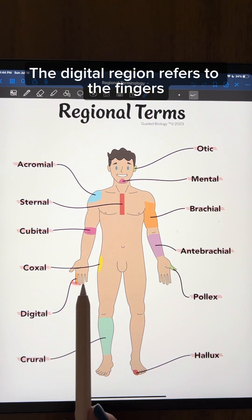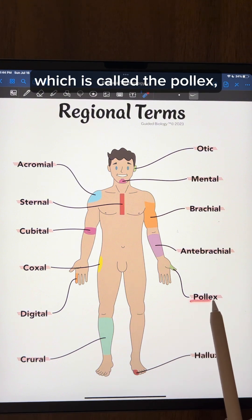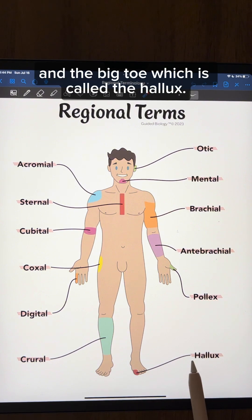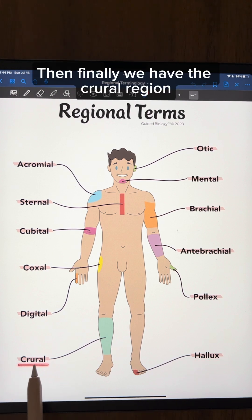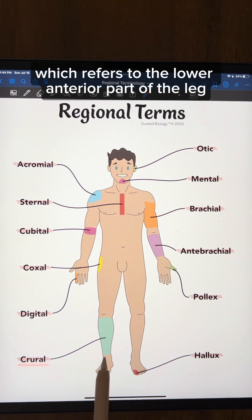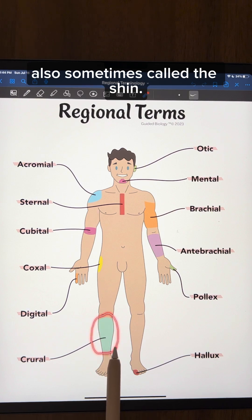The digital region refers to the fingers as well as the toes, excluding the thumb — which is called the pollex — and the big toe, which is called the hallux. Finally, we have the crural region, which refers to the lower anterior part of the leg, also sometimes called the shin.